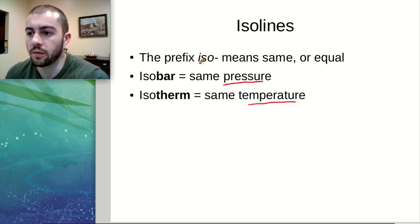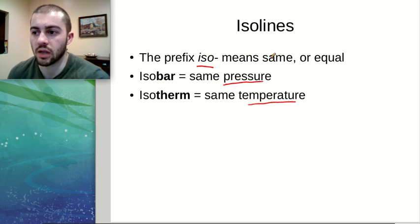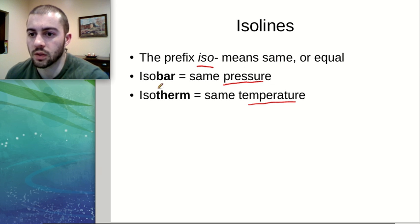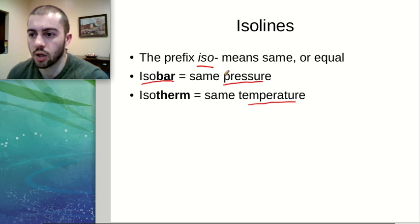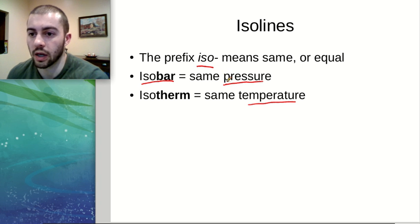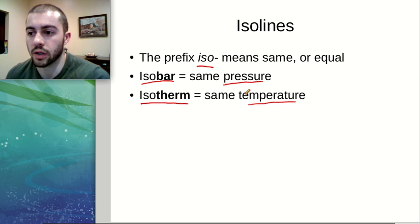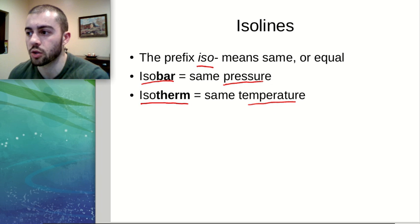The prefix ISO means that things are the same or equal. When talking about weather, we have two different types of ISO lines. The first type is isobar, which means the same pressure — we draw a line connecting areas that have the same pressure. The second type is isotherm, which means areas of the same temperature, so we draw a line connecting those different areas.